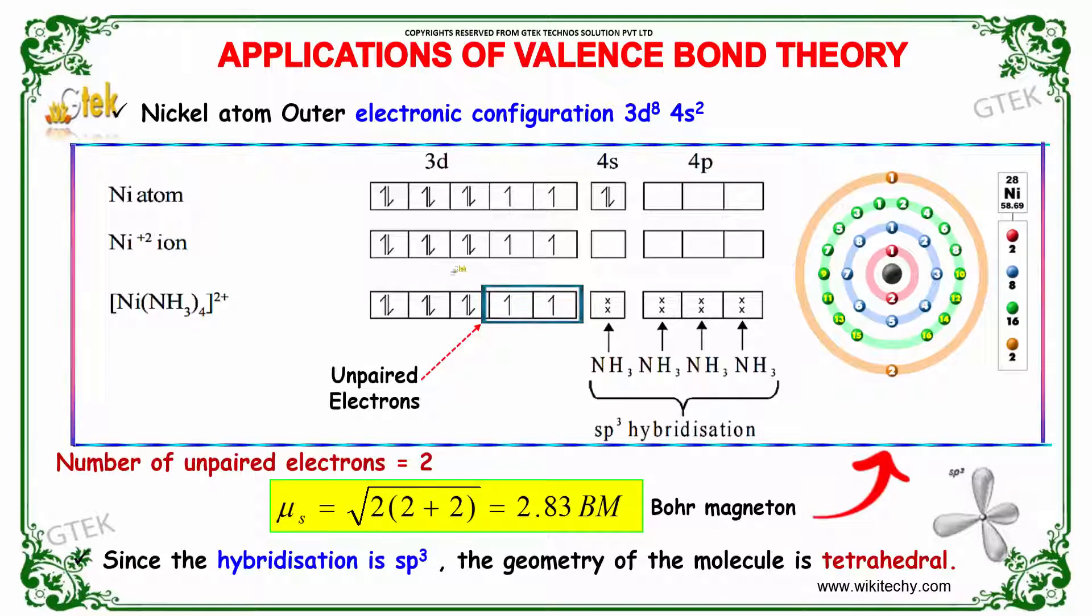With NH3 ammonia, which has paired electrons, this forms sp3 hybridization. The number of unpaired electrons is 2, so μs equals √(2×2+2) = 2.83 Bohr magneton. Since the hybridization is sp3, the geometry of the molecule is tetrahedral.